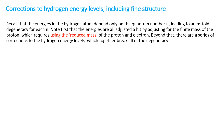So how does that get corrected? First, the energies are all adjusted a bit by accounting for the finite mass of the proton. In treating the hydrogen atom before, we treated the proton as sitting in place with infinite mass. But in fact, the electron and the proton rotate around a common center of mass, very near the proton. So you need to use the reduced mass of the proton and the electron, which is just a little bit different from the proton mass. That adjusts all energies slightly, but doesn't change the degeneracy.